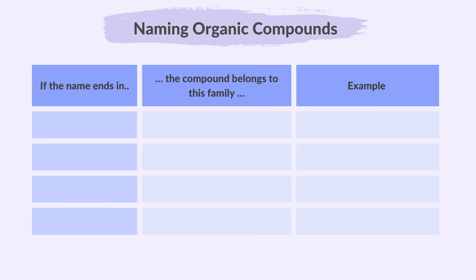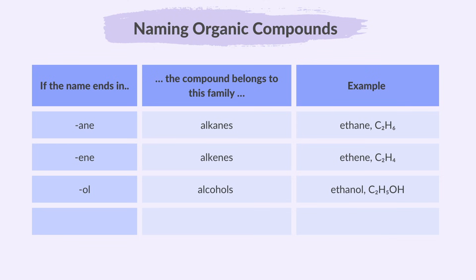We may identify the type of compound present if the chemical names end in one of these suffixes or endings. If the name ends in ane, the compound belongs to the alkane family — example, ethane. If the name ends in ene, the compound belongs to the alkene family — example, ethene. If the name ends in ol, the compound belongs to the alcohol family. If the name ends in oic acid, the compound belongs to the carboxylic acid family — example, ethanoic acid.